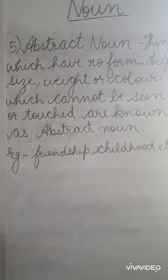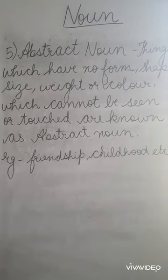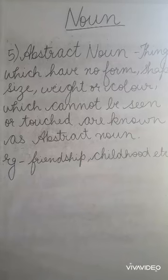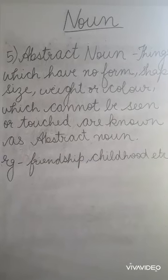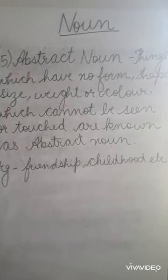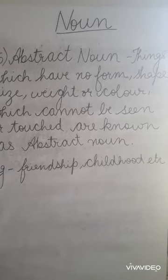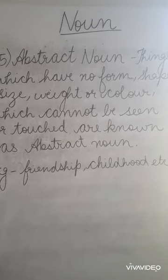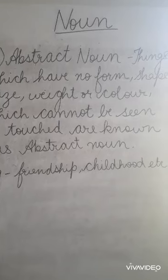The fifth noun is abstract noun. Things which have no form, shape, size, weight, or color — which cannot be seen or touched — are known as abstract nouns. Abstract nouns are those which don't have any form, shape, size, weight, or color of their own, and which we cannot see or touch.